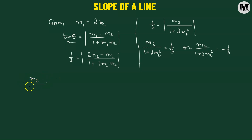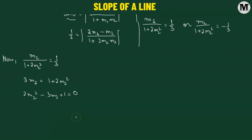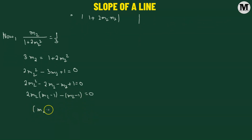For the first case, m2 divided by 1 plus 2m2 squared equals 1 over 3. Cross-multiplying gives 3m2 equals 1 plus 2m2 squared, leading to the quadratic equation 2m2 squared minus 3m2 plus 1 equals 0. Factorizing the middle term: 2m2 squared minus 2m2 minus m2 plus 1, which factors as 2m2 times (m2 minus 1) minus (m2 minus 1) equals 0, giving (m2 minus 1)(2m2 minus 1) equals 0.